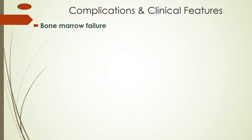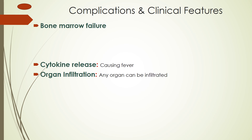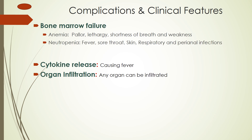Complications and clinical features: acute myeloblastic leukemia blast cells infiltrate and replace the bone marrow, causing bone marrow failure. Cytokine release causes unexplained fever. Organ infiltration also occurs. Bone marrow failure leads to anemia, neutropenia, and thrombocytopenia. In anemia, the patient looks pale, feels lethargy, shortness of breath, and weakness due to low hemoglobin. With neutropenia, the patient may develop infections — particularly sore throat, skin infections, and respiratory and perianal infections.